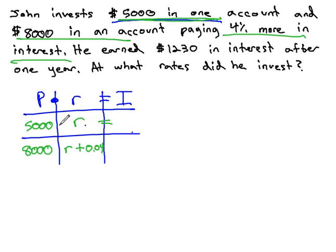We can now calculate the interest by multiplying the principal times the rate, and we've got 5,000R from the first account and 8,000R plus 320 in the second account.